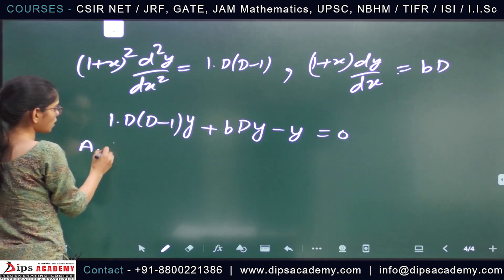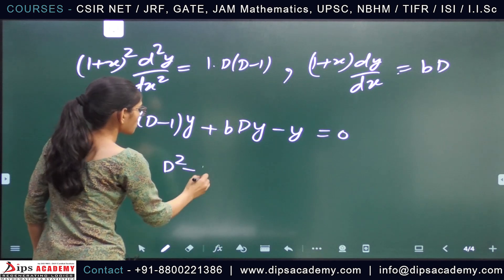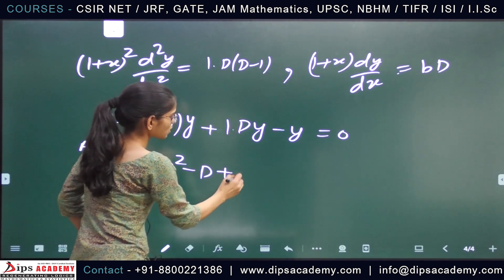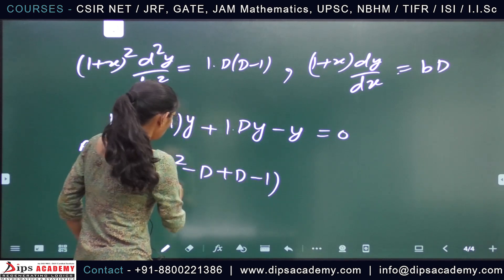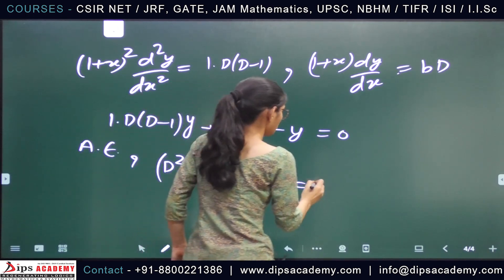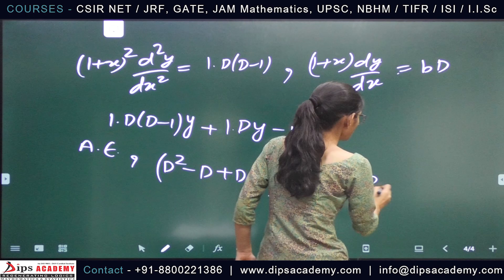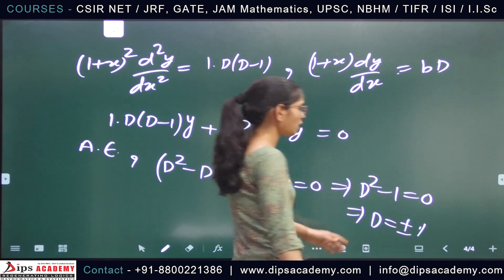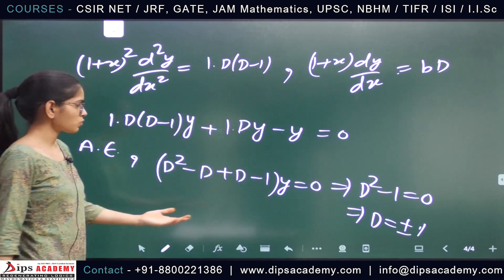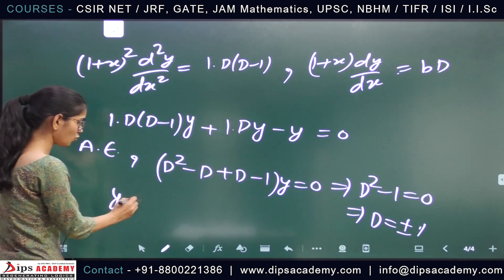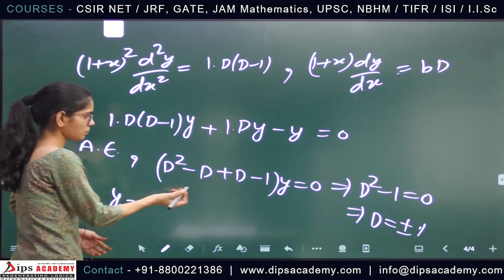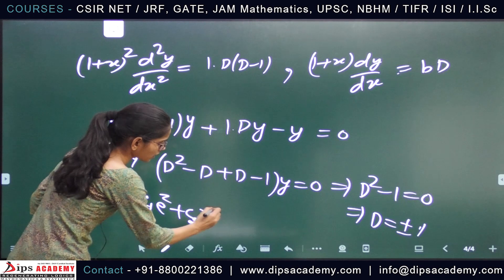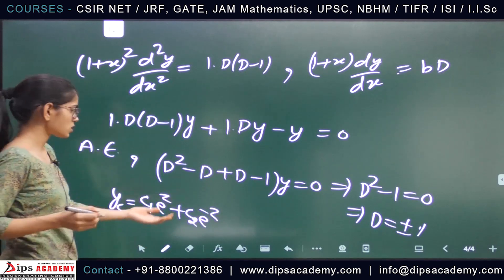We now have a constant-coefficient differential equation in z, which we know how to solve. The auxiliary equation is D² - D + D - 1 = 0, giving D² - 1 = 0, so D = ±1. The complementary function is y = c₁eᶻ + c₂e⁻ᶻ, where c₁ and c₂ are arbitrary constants.